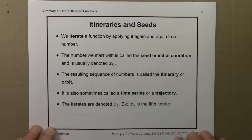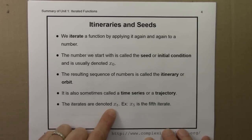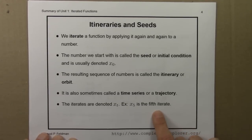When you iterate a function, you get a sequence of numbers. This sequence is called an itinerary or an orbit. It's also sometimes called a time series or trajectory. Individual iterates are denoted by xt, where t is the time step. For example, x5 would be the fifth iterate.